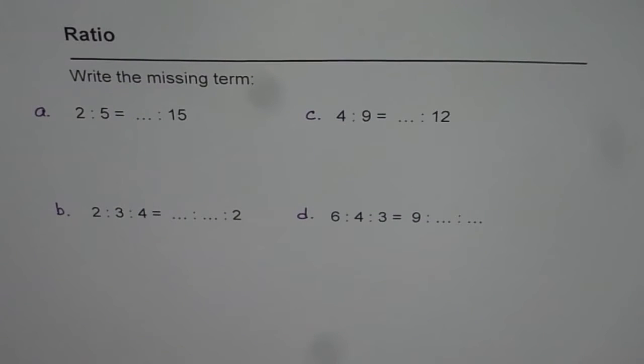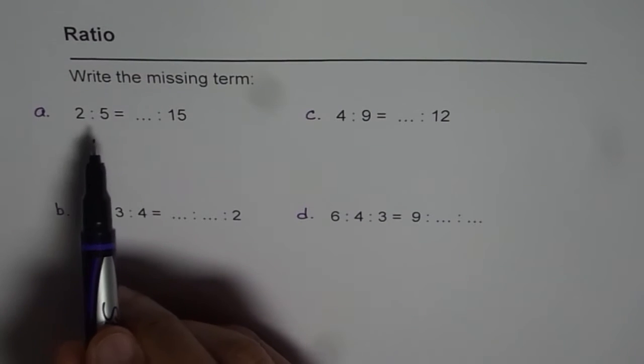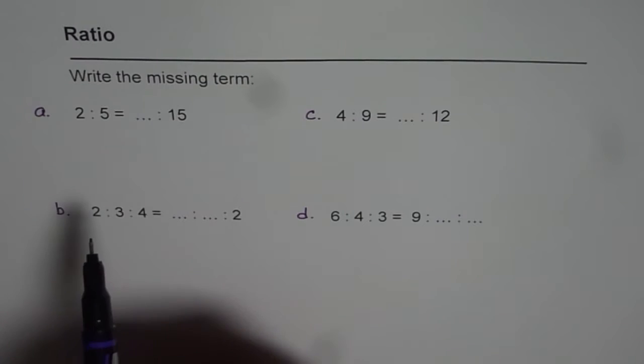Now let us review ratios and solve these four questions on the page. Write the missing terms. 2 is to 5 equals to what is to 15.